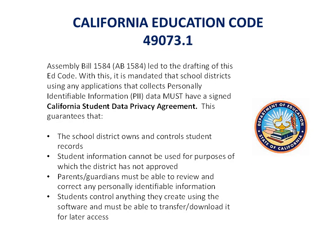From these federal and state laws, California Education Codes 49073.1 and 49073.6 were drafted to clarify data regulations for California schools. Ed Code 49073.1 covers Assembly Bill 1584 and requires that if an application collects personally identifiable information on a student, the vendor must sign a California Student Data Privacy Agreement.